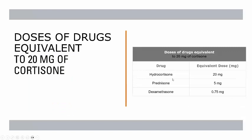One question which comes in dental boards: which is the most potent glucocorticoid? That is dexamethasone — only 0.75 mg of dexamethasone is equal to 20 mg of hydrocortisone or cortisone. Prednisone is also quite potent: 5 mg is equal to 20 mg of hydrocortisone.